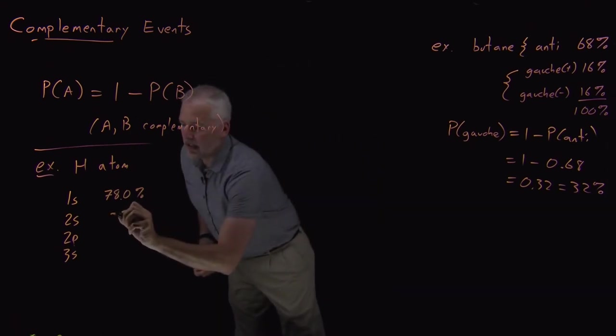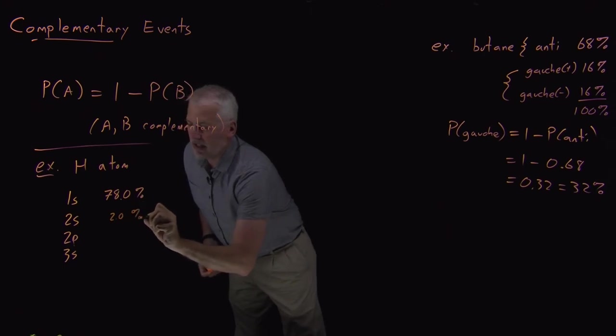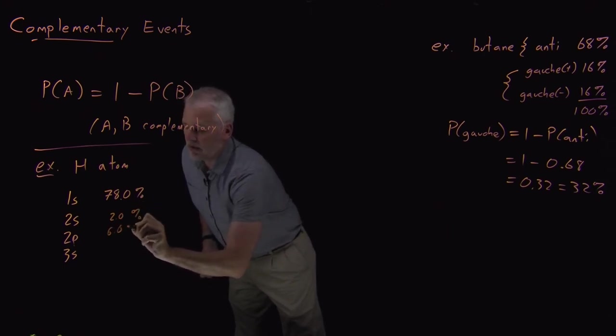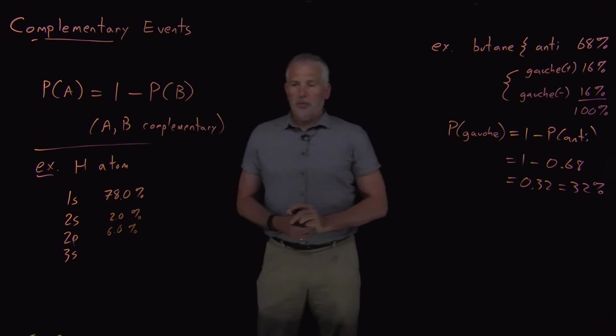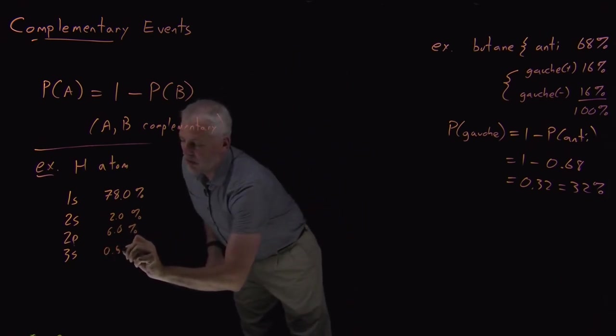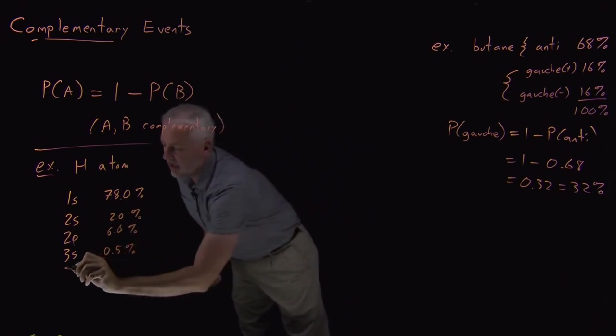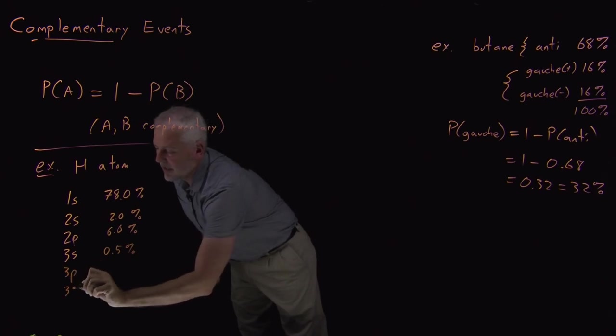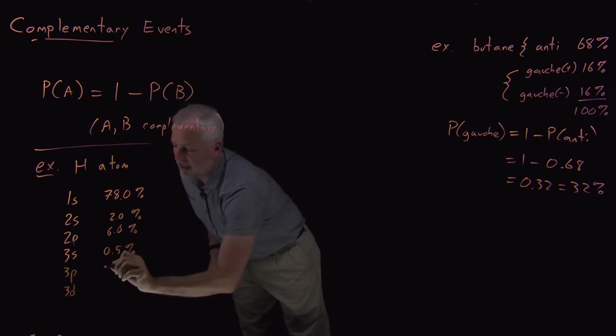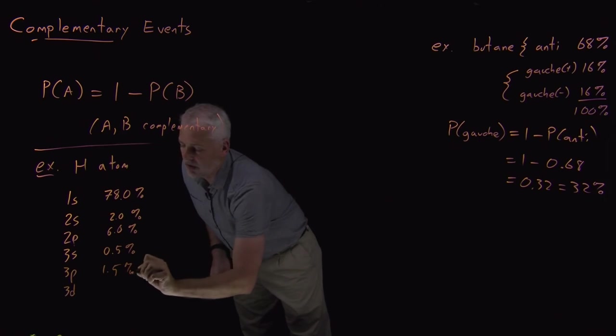And, in fact, there's a 2 percent chance of finding it in the 2s orbital and a 6 percent chance of finding it in the 2p orbital. And I can keep going. The more higher excited states, 3p, 3s, 3p, 3d, have their own individual probabilities.